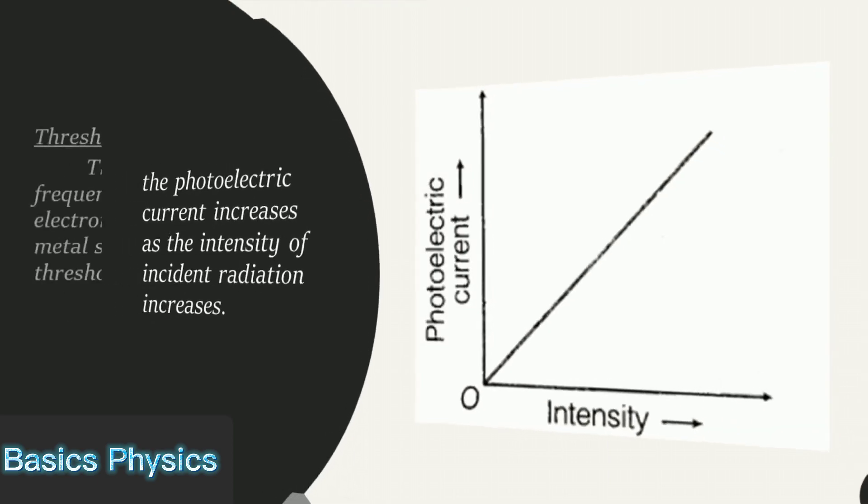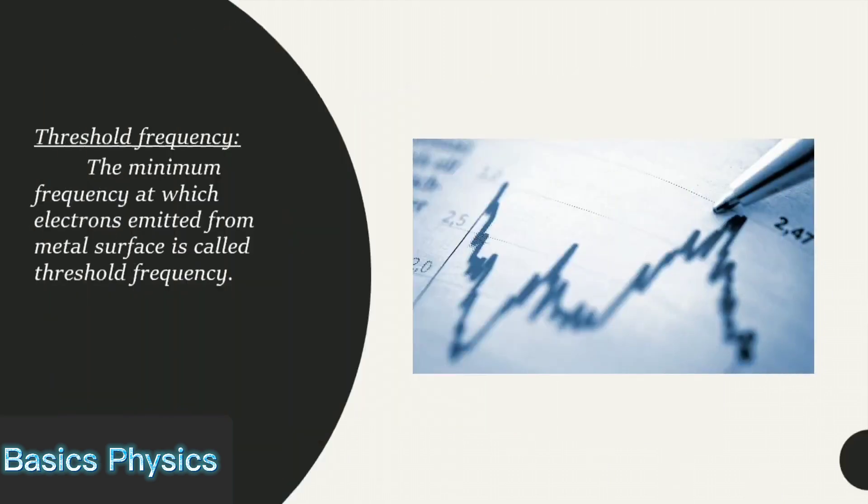The minimum frequency at which electrons are emitted from metal surface is called threshold frequency.